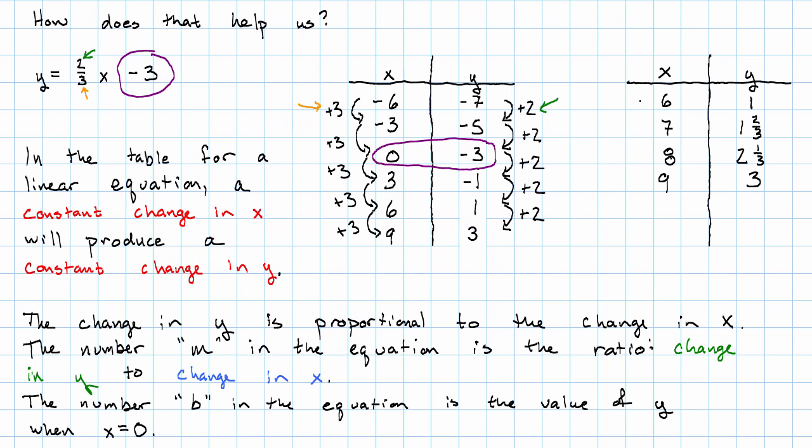Notice what's going on here now. In each row, I'm just adding one to x. What do I have to add to one to get one and two thirds? Well, two thirds.